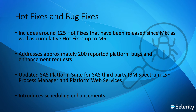There have been around 125 hotfixes released since M6 came out in November 2018, and these are included in M7 as well as all the previous hotfixes. These hotfixes address around 200 bugs and enhancements within the SAS software. Also included as part of M7 is an updated platform suite for SAS consisting of IBM Spectrum LSF, Process Manager, and Platform Web Services, and this has also had the effect of introducing some scheduling enhancements.